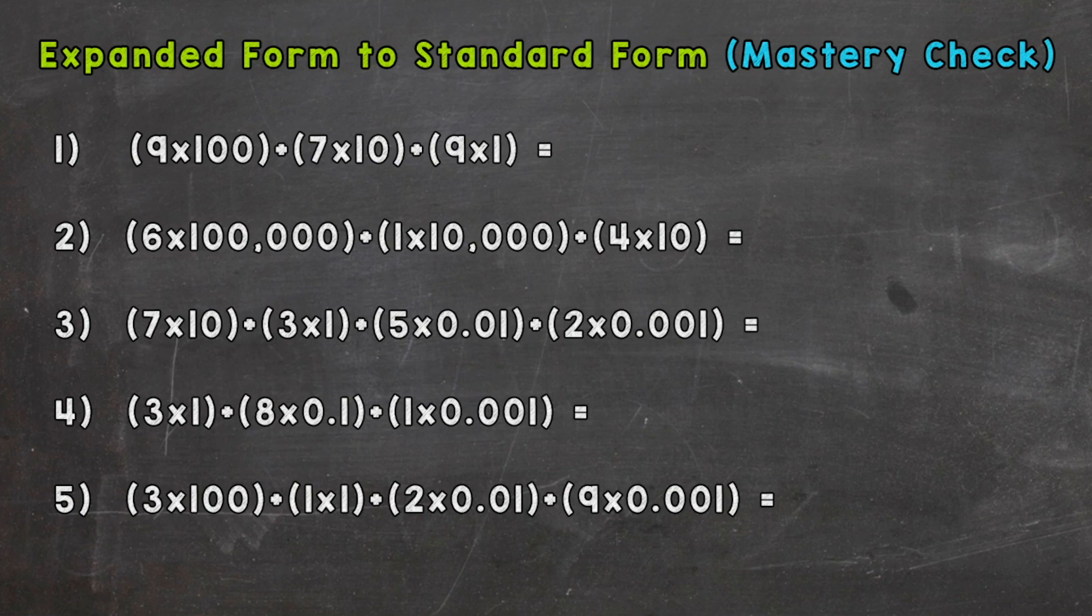All right, welcome back. I'm assuming you have those five done, so let's see how you did. Your goal I would say would be to have four out of the five. Let's start with number one. We start with a nine in the hundreds place, next we have a seven in the tens, and then lastly we have a nine in the ones place. So a nine with the value of nine hundred, a seven with the value of seventy, and a nine with the value of nine. So for number one, nine hundred seventy-nine.